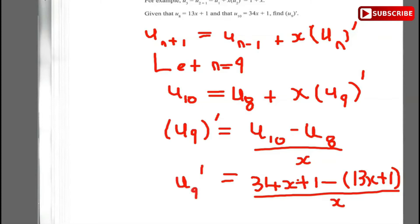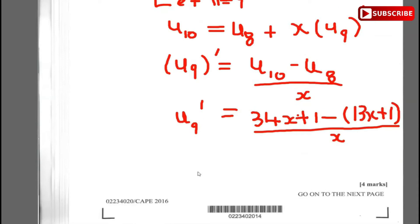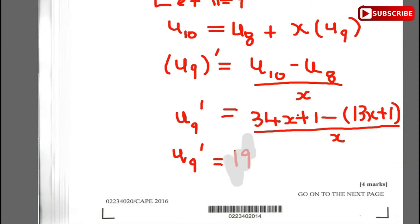Computing this: 34x minus 13x is 21x, and 1 minus 1 is 0. So u9 prime equals 21x over x, which is 21. My apologies for an earlier addition error — the correct answer is u9 prime equals 21.